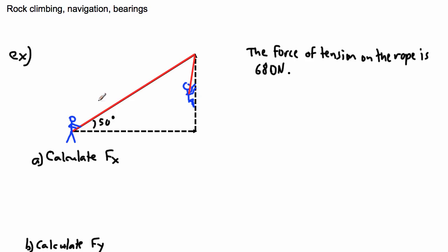So what I'm trying to tell you is that you've got a force of tension — this force right here — and we could draw an arrow right here for this force. We're trying to draw this arrow going upwards, and this arrow has a length of 680 newtons. Now remember, it doesn't have to be a distance length — it could be a quantity. In this case, this many newtons of force.